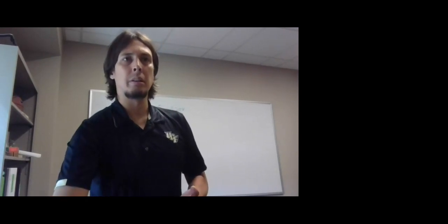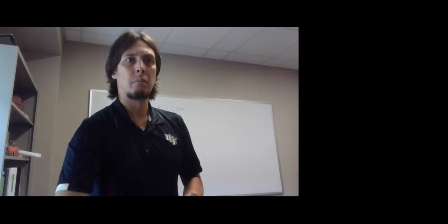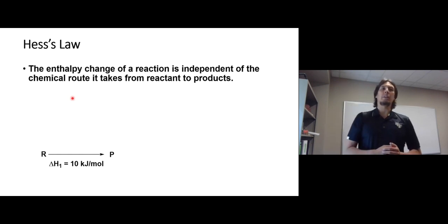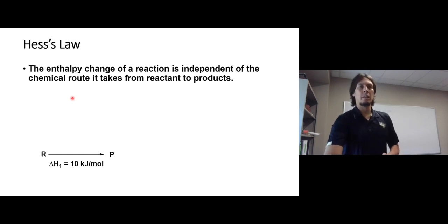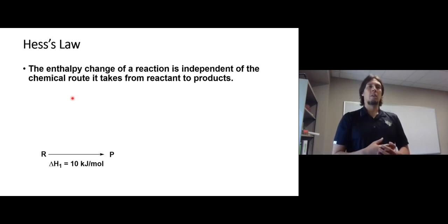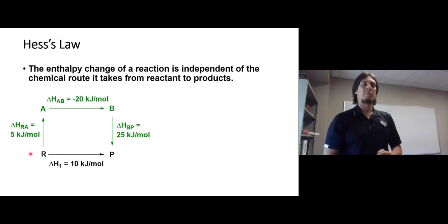To make that easier to understand: let's say we have a reaction R to P, where R is the reactant and P is the product. This has an enthalpy change denoted as delta H1 of 10 kilojoules per mole. The overall enthalpy change is going to be the same whether R is converted directly to P or if there's an alternate route.